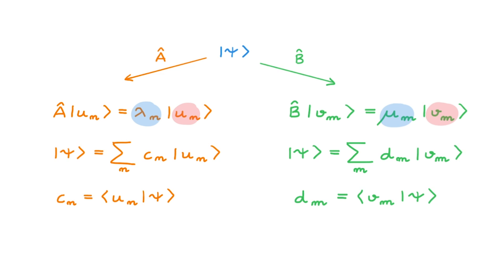So here we're always working with the same state psi of the system. These two different representations are simply two different ways of writing the same state. We could solve any quantum problem in terms of either, and the physics wouldn't change. What we'll learn in this video is that the Heisenberg uncertainty principle is a mathematical relation between the C coefficients and the D coefficients that we can use to write the same quantum state psi.